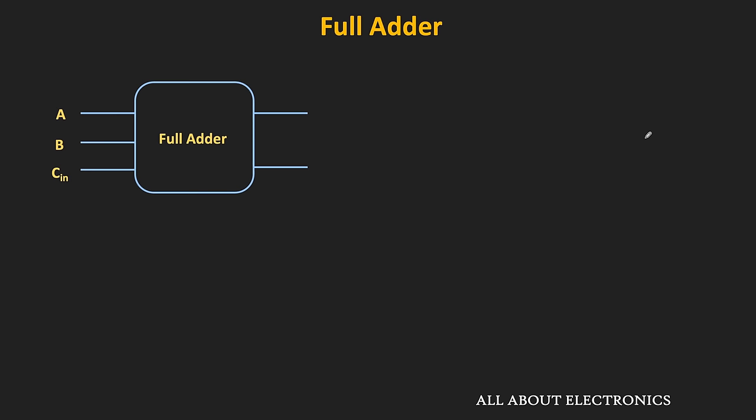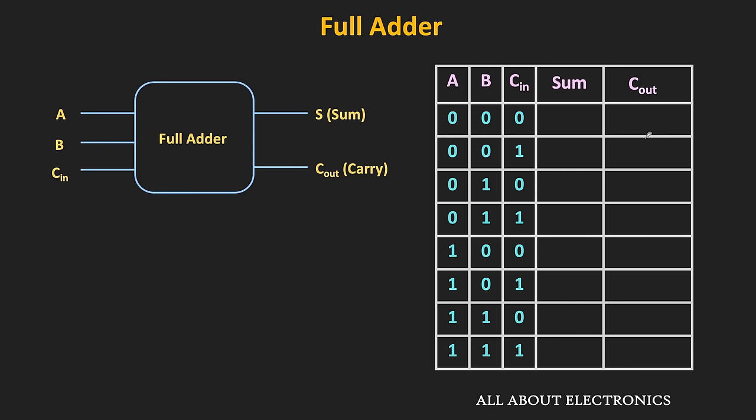So if we want to do the addition of two bits along with the carry bit, it can be performed using the full adder circuit. The full adder is the combinational circuit which adds two bits and the incoming carry bit, and generates the sum and the carry bit as the output. Now let us see the logic circuit of this full adder by first examining its truth table.